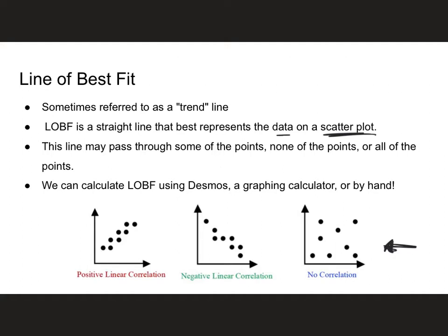We can calculate the line of best fit using Desmos, that's really my favorite way to do it. We could do it by graphic calculator, Excel has a really nice feature, or we can even do it by hand. When we do that, we're going to see one of three different things happen: a positive linear correlation, a negative linear correlation, or no correlation at all.